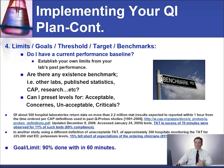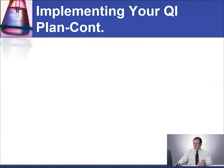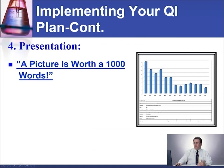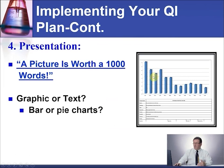You keep doing that until you cannot really do any improvement with that indicator. At that moment, you can either stop monitoring or, if it's required by the accreditation body, you still need to monitor. So our goal will be 90% done within 60 minutes. I like to present it in a bar graph because it's easy to see and manage.